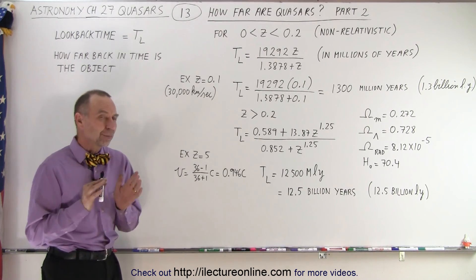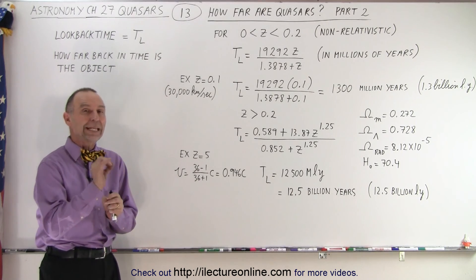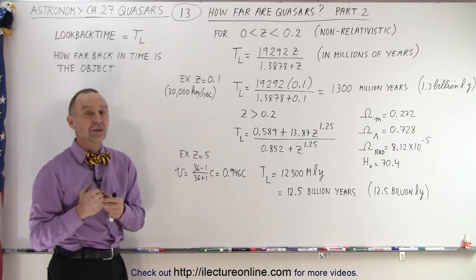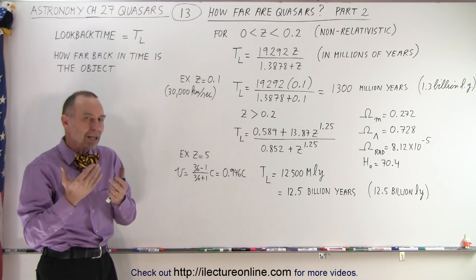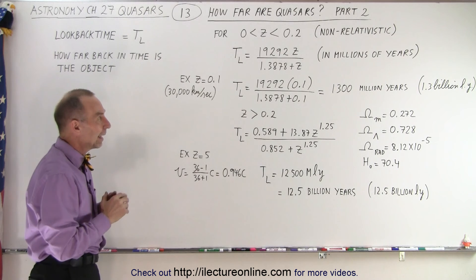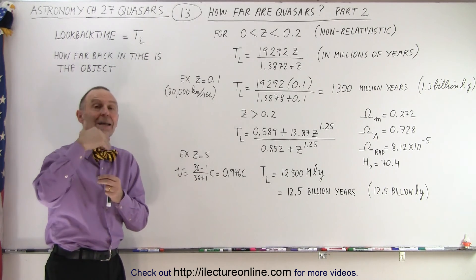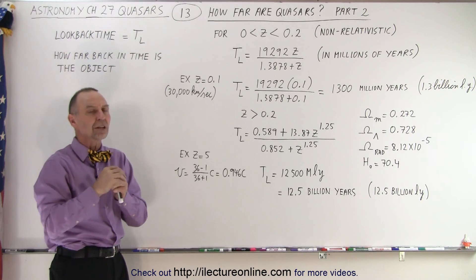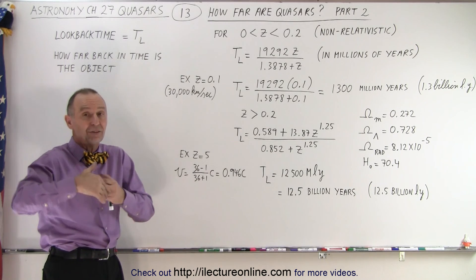Now, we can also express the distance to where the object was at the time the radiation that we're currently receiving left the object. Of course, since then, the object has moved much farther away, but at least we can estimate how far the object was at the time the radiation left the object. And so we can talk about it in terms of how long ago did the radiation leave the object,